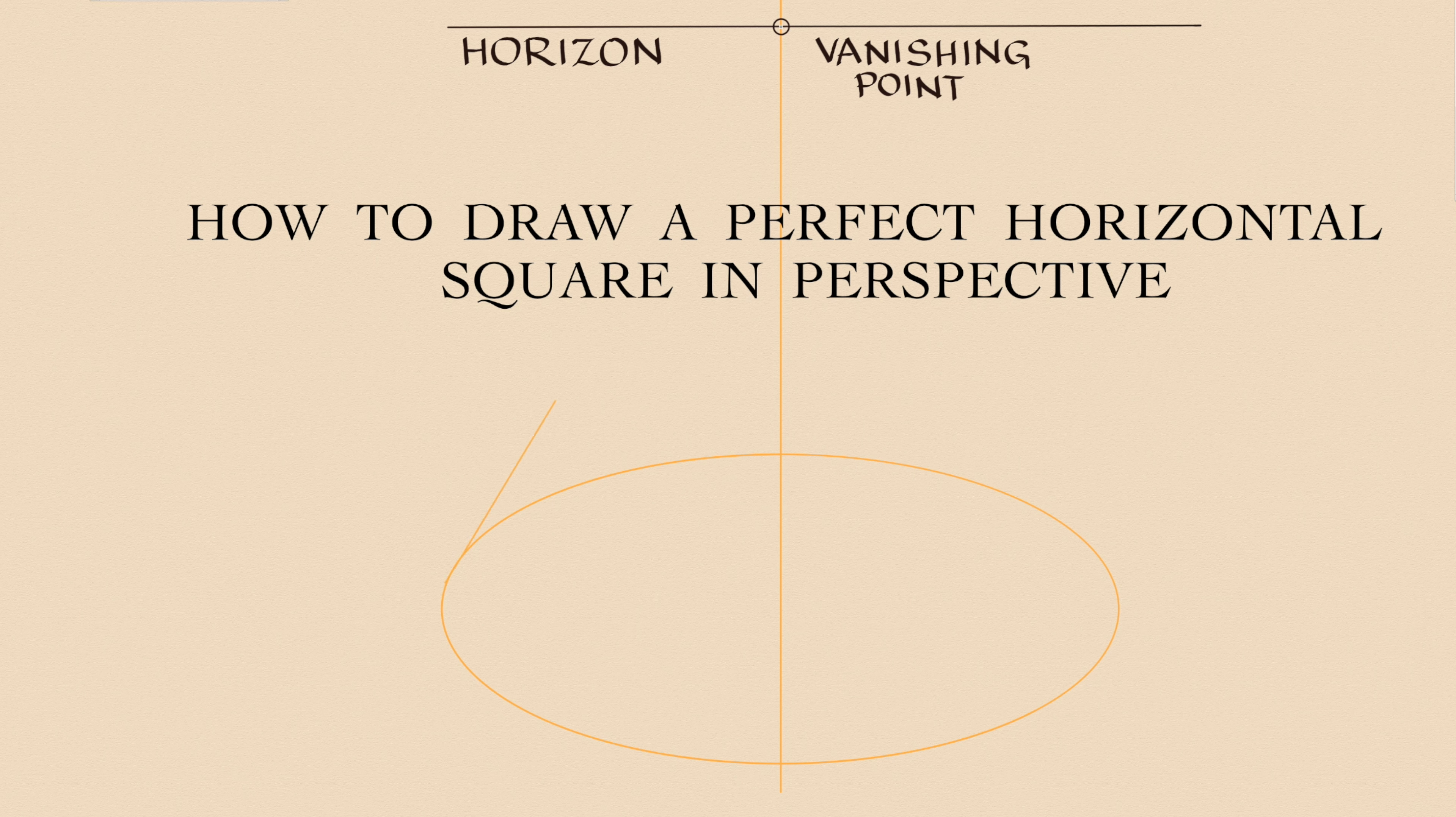Two tilted vanishing lines converge into that point. Together with two horizontal lines they form a square in one point perspective.